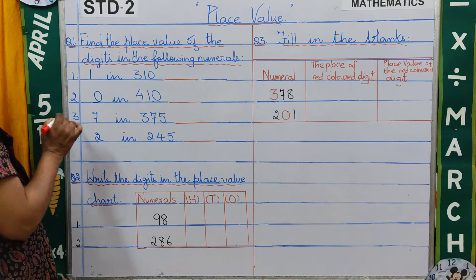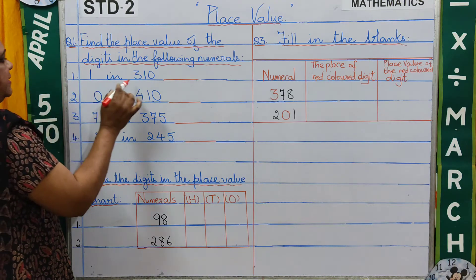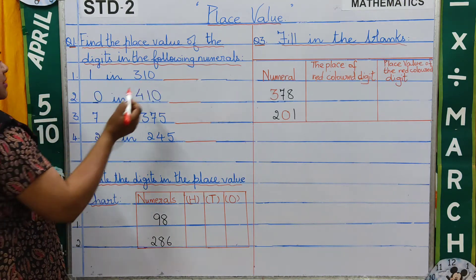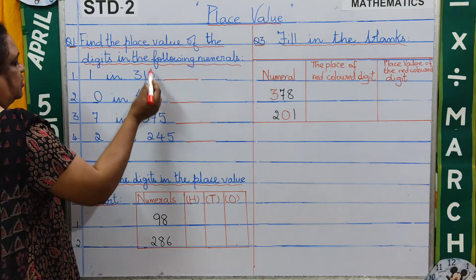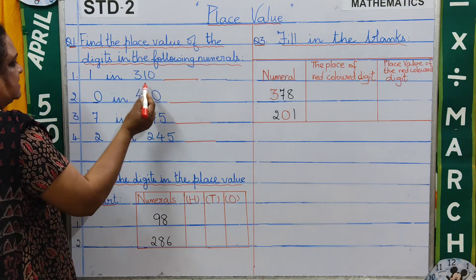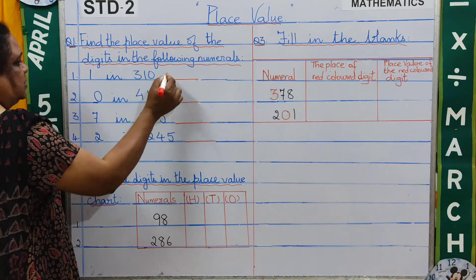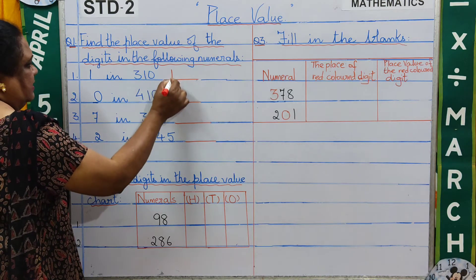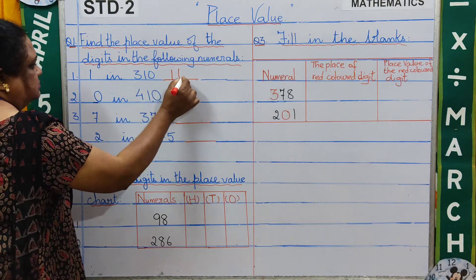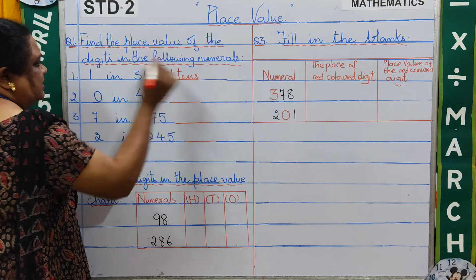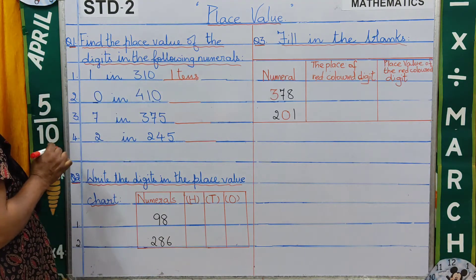Number 1: find the place value of 1 in 310. Here, 0 is in the ones place and 1 is in the tens place. So 1 is in the tens place.